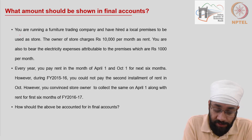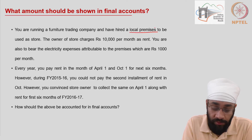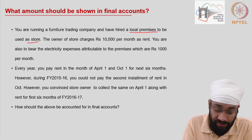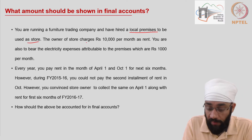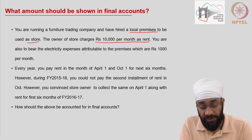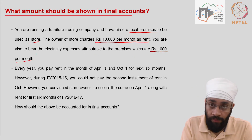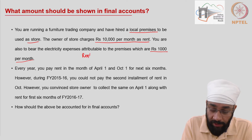The statement says: you are running a furniture trading company and you have hired a local premises — meaning a building — to be used as a store. The owner of the store charges you 10,000 per month as rent. You are also to bear the electricity expenses attributable to the premises, which are 1,000 per month, also fixed. So there are two types of expenses: rent and electricity.